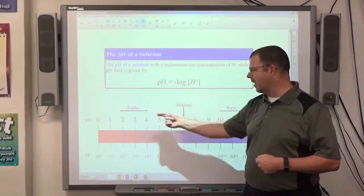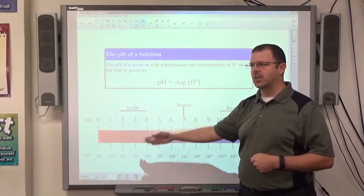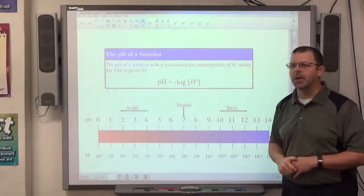7 is a neutral. Anything left, so less than 7, is going to be acid. Anything to the right of 7 is going to be a base.